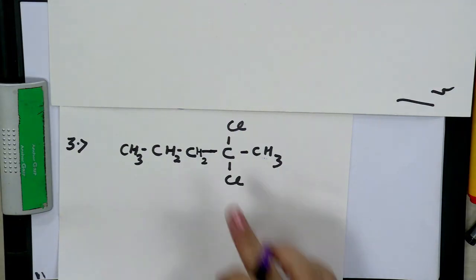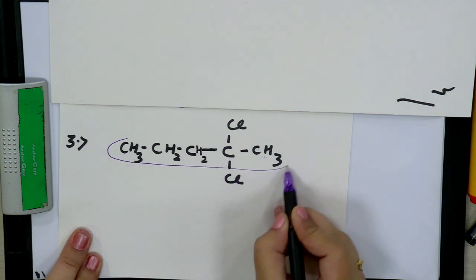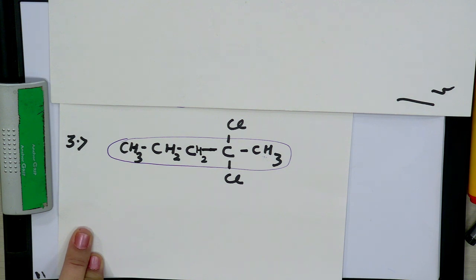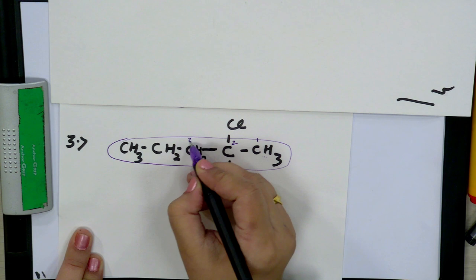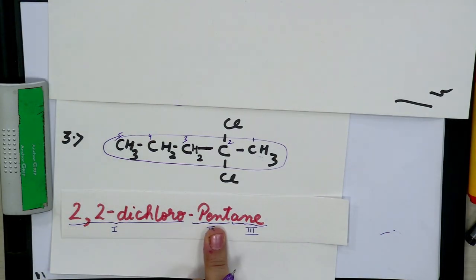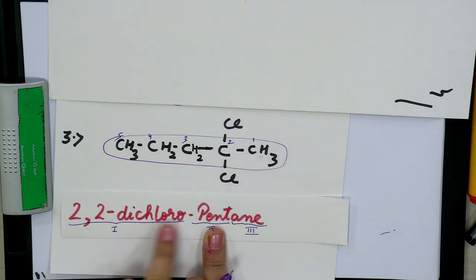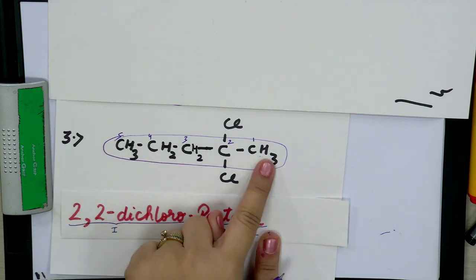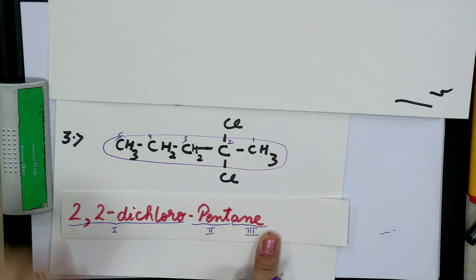Now consider a structure with two Cl substituents. Select the longest carbon chain and number it so the Cl atoms get the lowest numbers. If both Cl atoms are at the second carbon, you write '2,2' to specify the position of both. 'Di' is used because two Cl atoms are present. With five carbons in the main chain and all single bonds, the name becomes 2,2-dichloropentane.